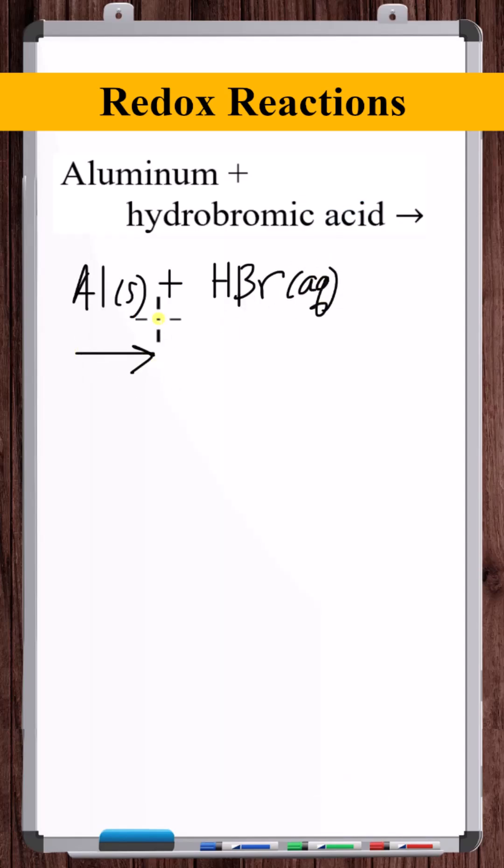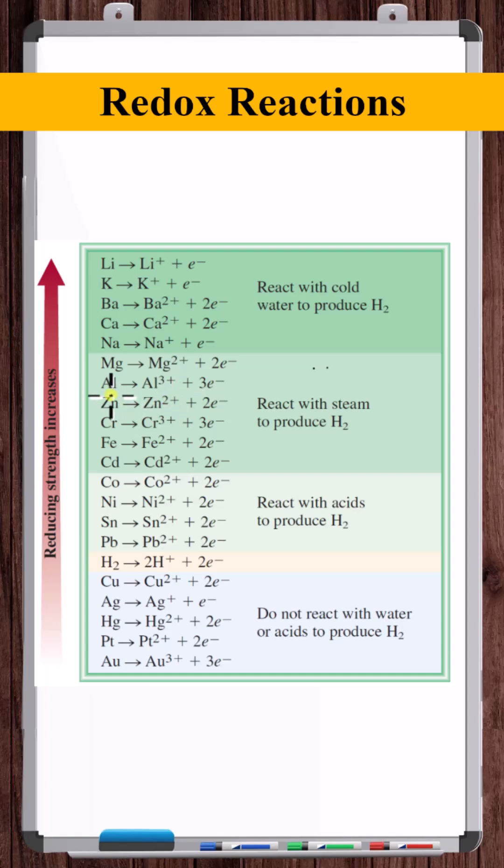And what's going to result? Well, potentially, the aluminum will displace the hydrogen from solution. So if we come to the metal activity series, we see that aluminum is above hydrogen. So aluminum will displace hydrogen from solution.